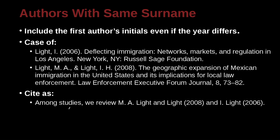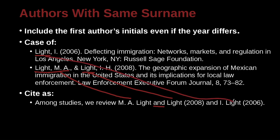In our paper, we would cite it this way: 'Among studies, we review M.A. Light and Light, 2008, and I. Light, 2006.' Here we use 'and' because it's outside the parentheses. And then in the second citation, we're citing this Light, who is the I. Light from 2006.